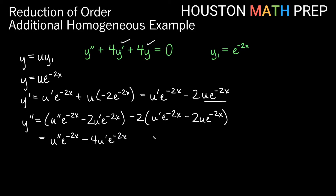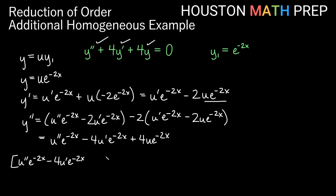Negative 2 times negative 2 here would make that plus 4u e to the negative 2x. So we have our y double prime now as well. Let's go ahead and plug all of this into our equation. Starting with y double prime: u double prime e to the negative 2x minus 4u prime e to the negative 2x plus 4u e to the negative 2x.